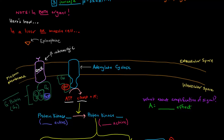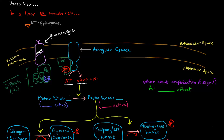Glycogen breakdown is triggered by a G-protein coupled receptor cascade. Epinephrine comes over and binds a G-protein coupled receptor on the liver or muscle cell. Once it binds, the G-protein is activated. Specifically, this is a stimulatory G-protein — some G-proteins can be inhibitory, and stimulatory ones have 'S' as a subscript. Initially when inactive, it has a GDP bound; once activated, it has a GTP bound.